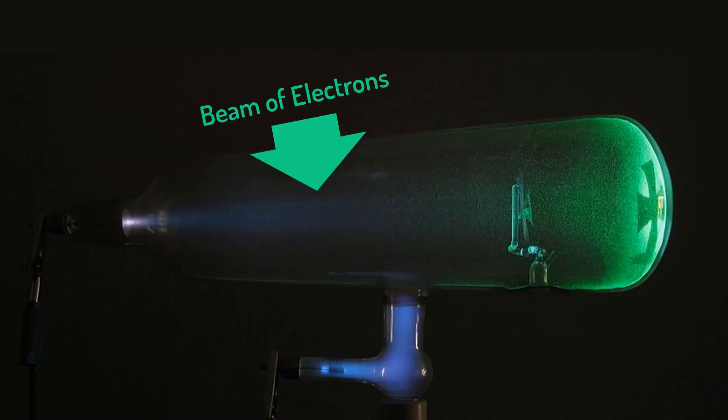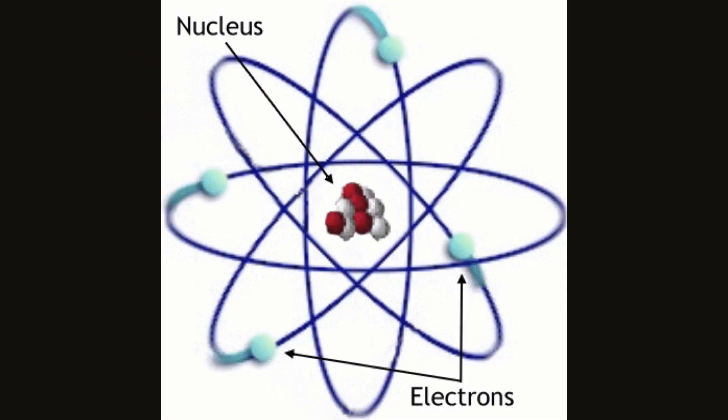What Crookes missed was this radiant matter wasn't a molecule at all. For what he was studying, the cathode rays are really beams of electrons, and electrons are not molecules. They're not atoms. They are part of an atom. They are a subatomic particle, meaning smaller than atomic. However, Crookes couldn't figure out a way how to definitively prove that his ray was made out of particles, nor how to measure its mass or charge.